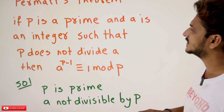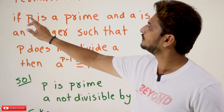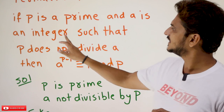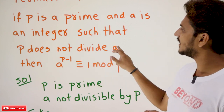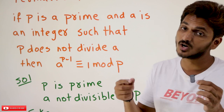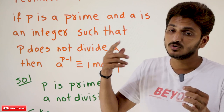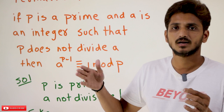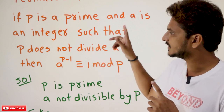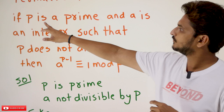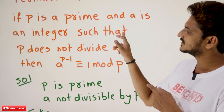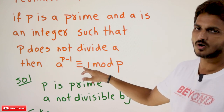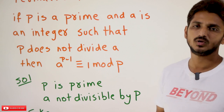Coming to Fermat's Little Theorem. The theorem statement says that if p is a prime number and a is an integer such that p does not divide a, then whenever p does not divide a, multiples of a are going to generate the numbers 1, 2, 3, 4 up to p minus 1. So if p is a prime number and a is an integer such that p does not divide a, then we need to show that a^(p-1) ≡ 1 (mod p). This is what we need to show.